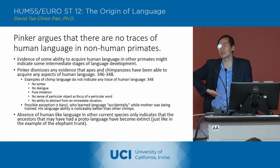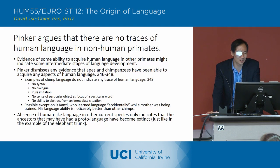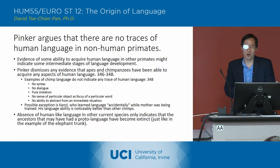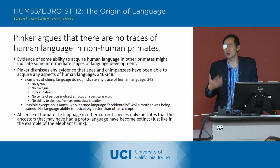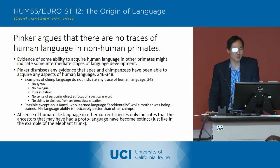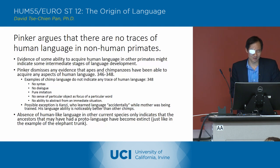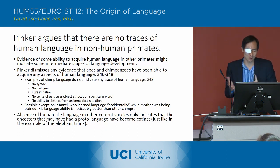Pinker looks at some other non-human primates — experiments with chimpanzees and bonobos — and says that might provide some evidence of the ability to acquire human language in other primates, and might indicate some intermediate stages in language development. But then he basically dismisses any evidence that apes and chimpanzees might have aspects of human language. He points out they have no syntax, no dialogue, they're just imitating, there's no sense of particular objects as focus of particular words, and no ability to abstract from the immediate situation.